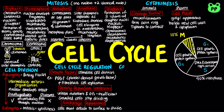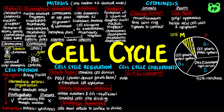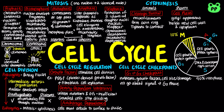The sequential events of the cell cycle are directed by a distinct cell cycle control system, which consists of three main checkpoints. The G1 checkpoint checks for abundant nutrients, growth factors, appropriate cell size, and the absence of cell damage. If the cell does not receive the go-ahead signal, it will exit the cycle and switch into a non-dividing state known as the G0 phase.